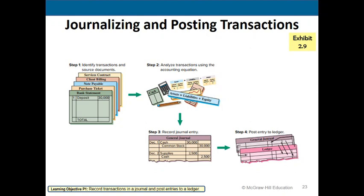Step four is to post this entry to the affected ledger accounts — in this case, cash and common stock. Most companies use accounting software such as QuickBooks, which automatically performs steps three and four simultaneously. When you enter a journal entry, the software simultaneously posts it to the proper ledger accounts — in this first transaction, the cash account and common stock account.